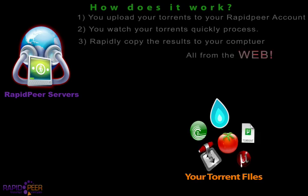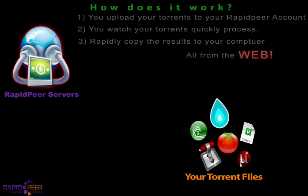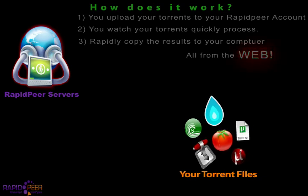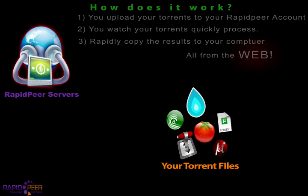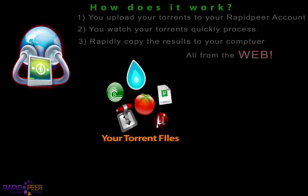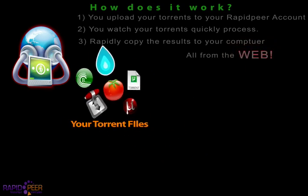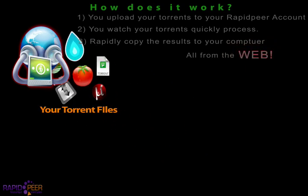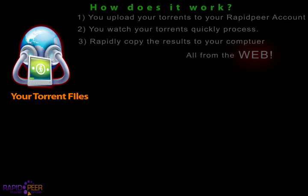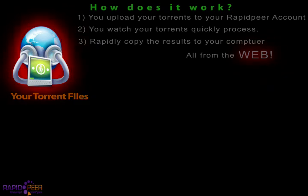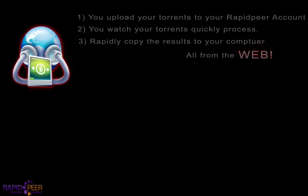Here's a quick overview of how Rapidpeer works. First, you upload your torrent files to your Rapidpeer account. This is done via a web page. Then, from this very same web page, you can watch as your torrent rapidly downloads.